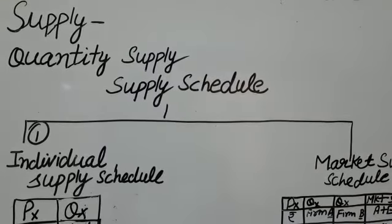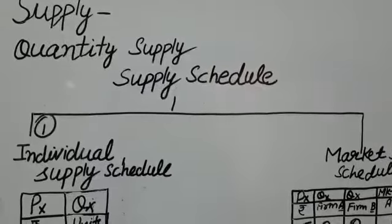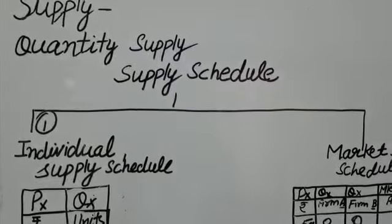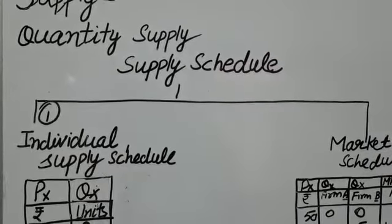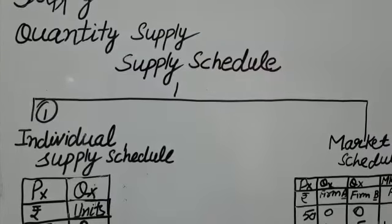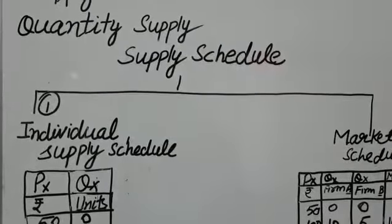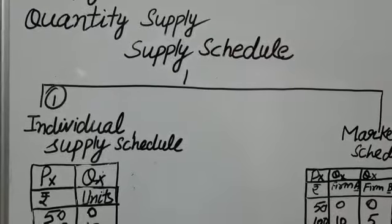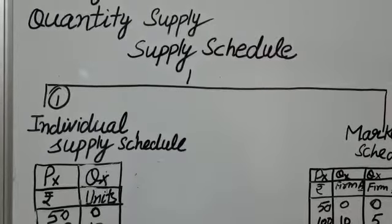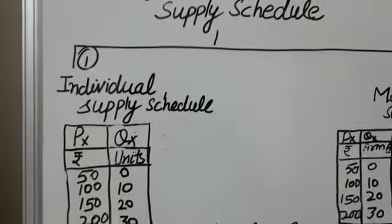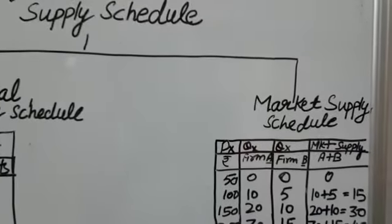Now, supply schedule. A supply schedule is a table showing various quantities of a commodity offered for sale at different possible prices of that commodity at a point of time. It has two aspects: Number 1, individual supply schedule; Number 2, market supply schedule.